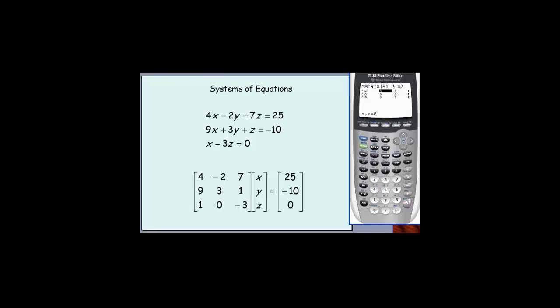Now I want to enter these three rows into matrix A. Four, negative two, and seven as row one. Nine, three, and one as row two. And one, zero, and negative three as our third row.